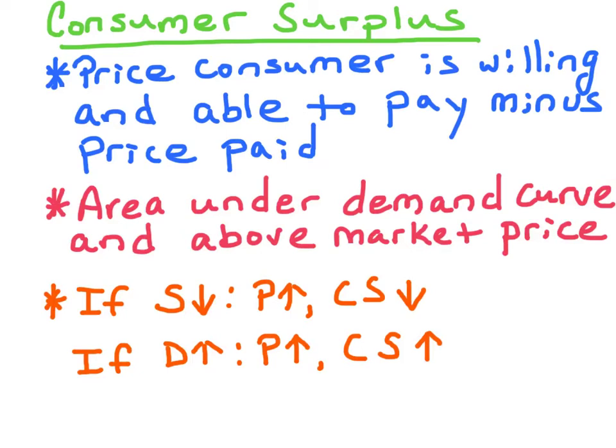The area of consumer surplus can be described as under the demand curve and above the market price. When the price of a good changes, the area of consumer surplus changes.